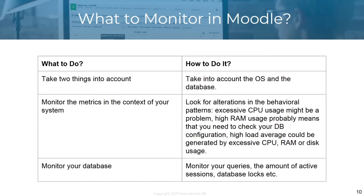You need to monitor the metrics in the context of your system and look for alterations in behavior patterns. For example, if your system is using a lot of CPU you might have a problem. If your system is using high RAM, you probably need to check your database configuration. If you have a very high load, it's going to be generated by CPU, RAM, or disk usage.